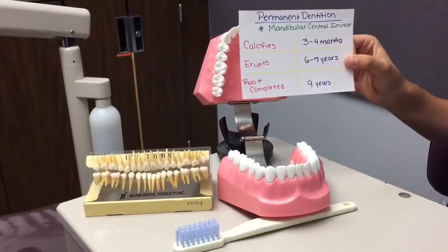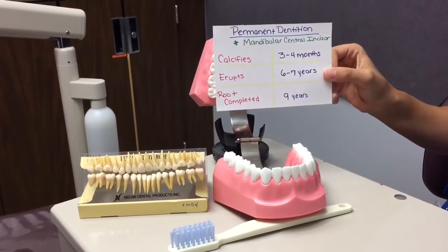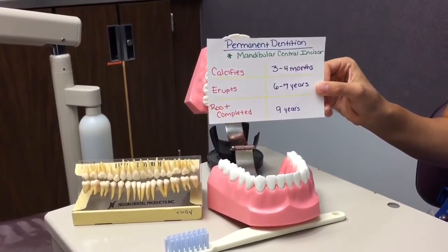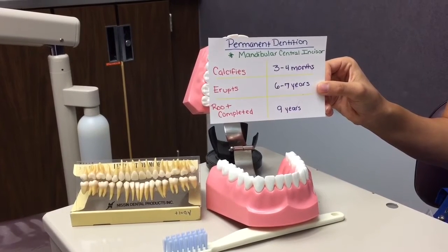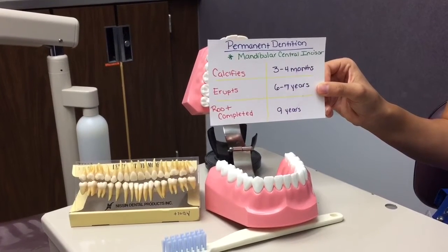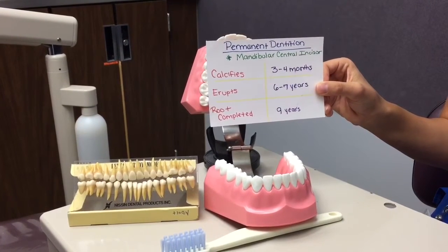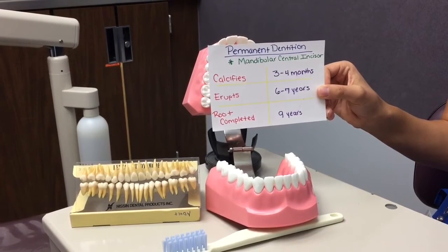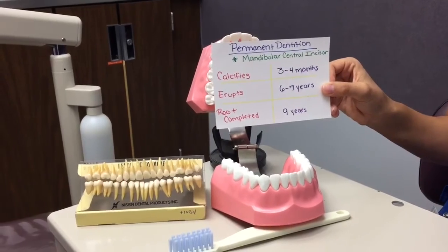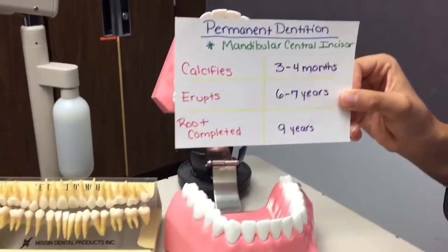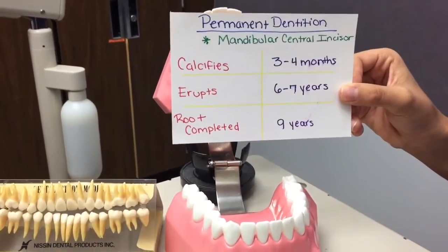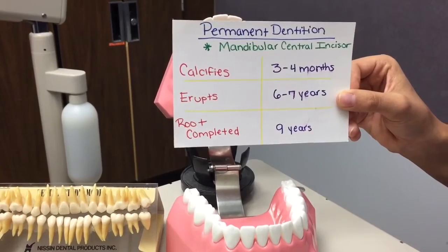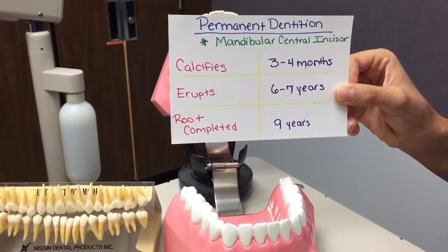The permanent mandibular centrals begin to calcify at 3 to 4 months. The adult mandibular centrals are the first to erupt at 6 to 7 years. Root completion for these teeth occurs at 9 years of age for the adult dentition.